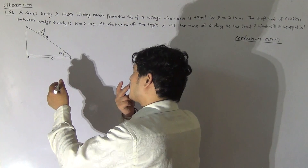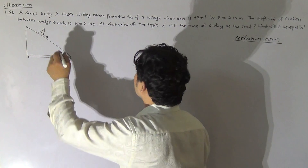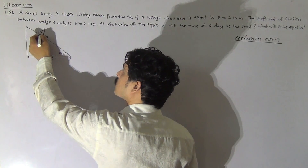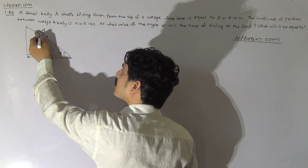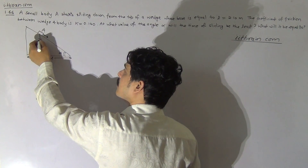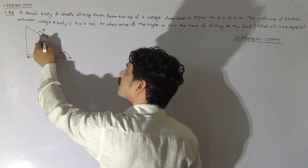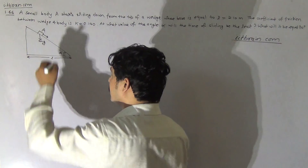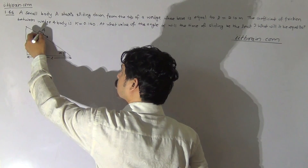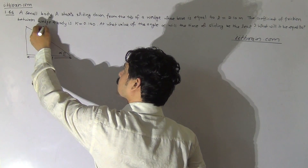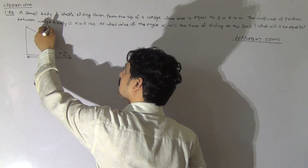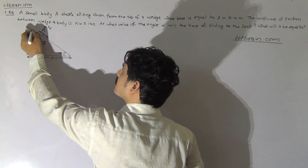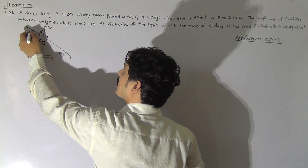First, create a free body diagram for the body. All the forces on the body act on mass M. The first force is due to gravity, Mg. The second is the normal reaction of the surface, N. The third force is friction acting in the upward direction, K.